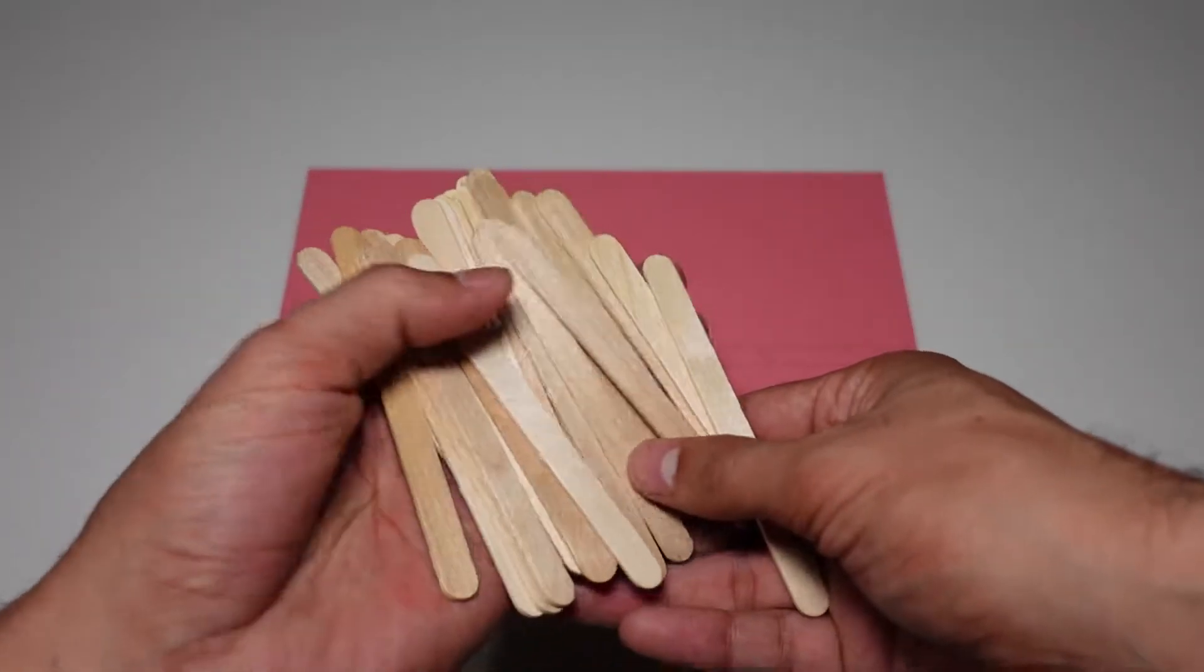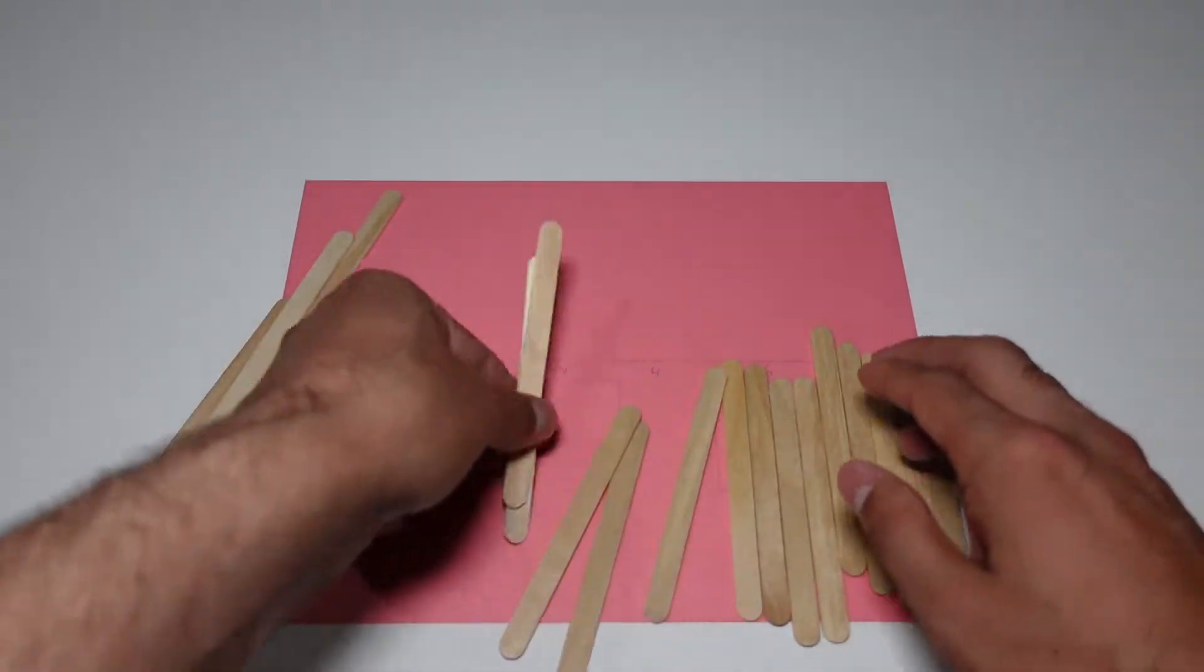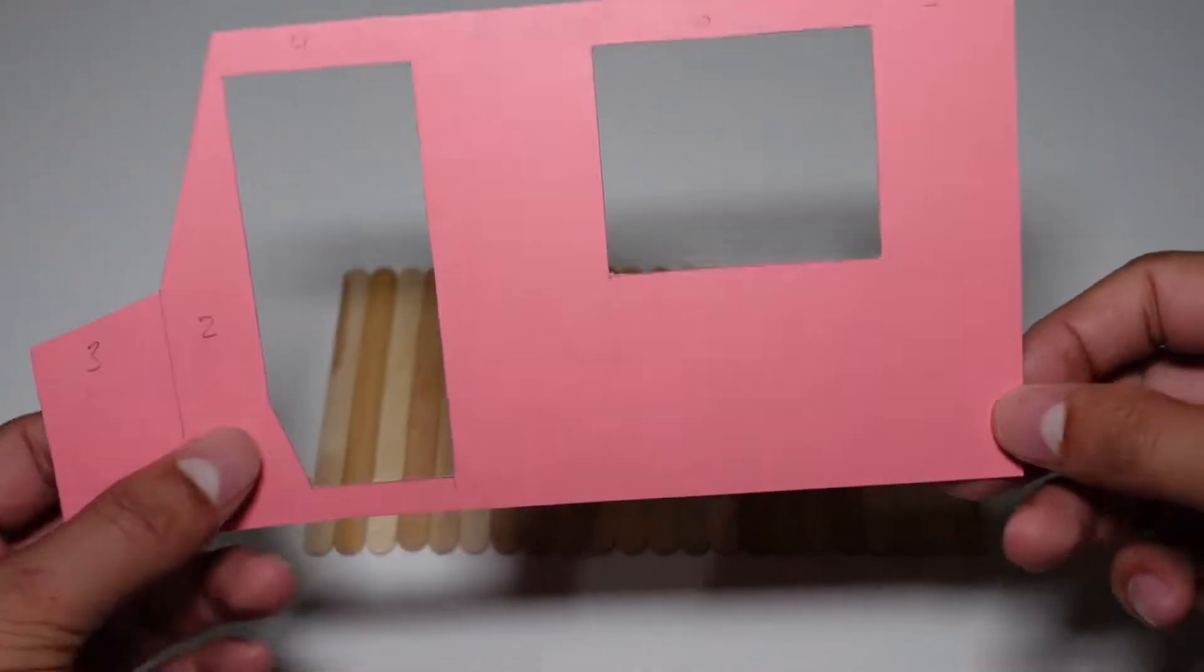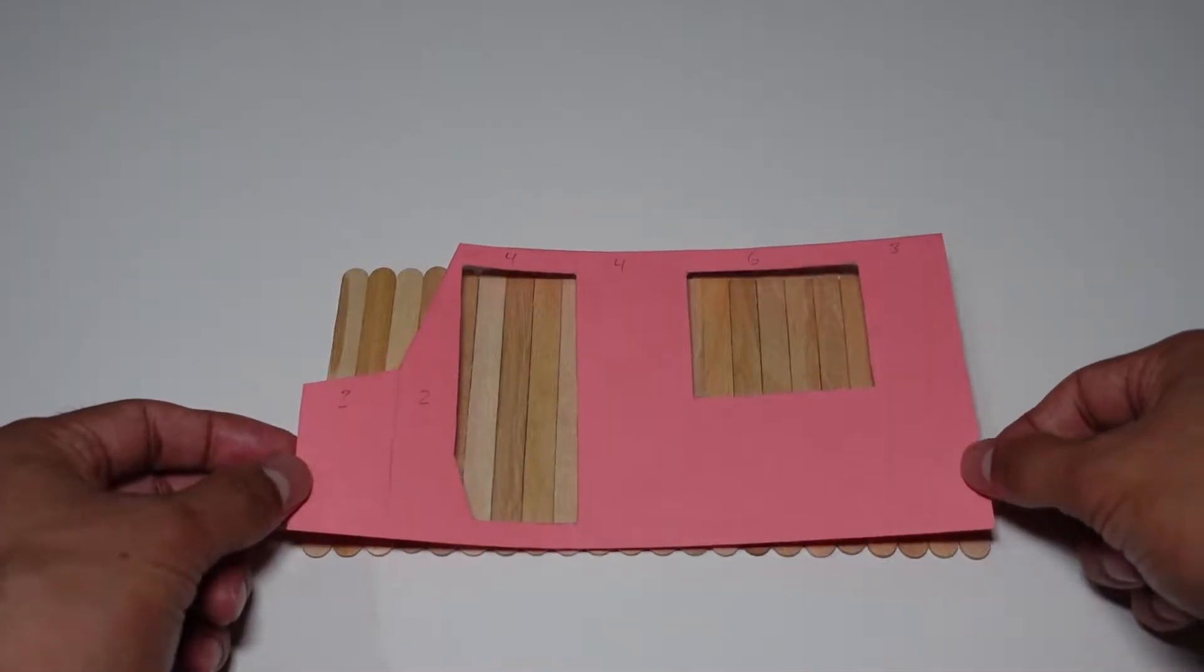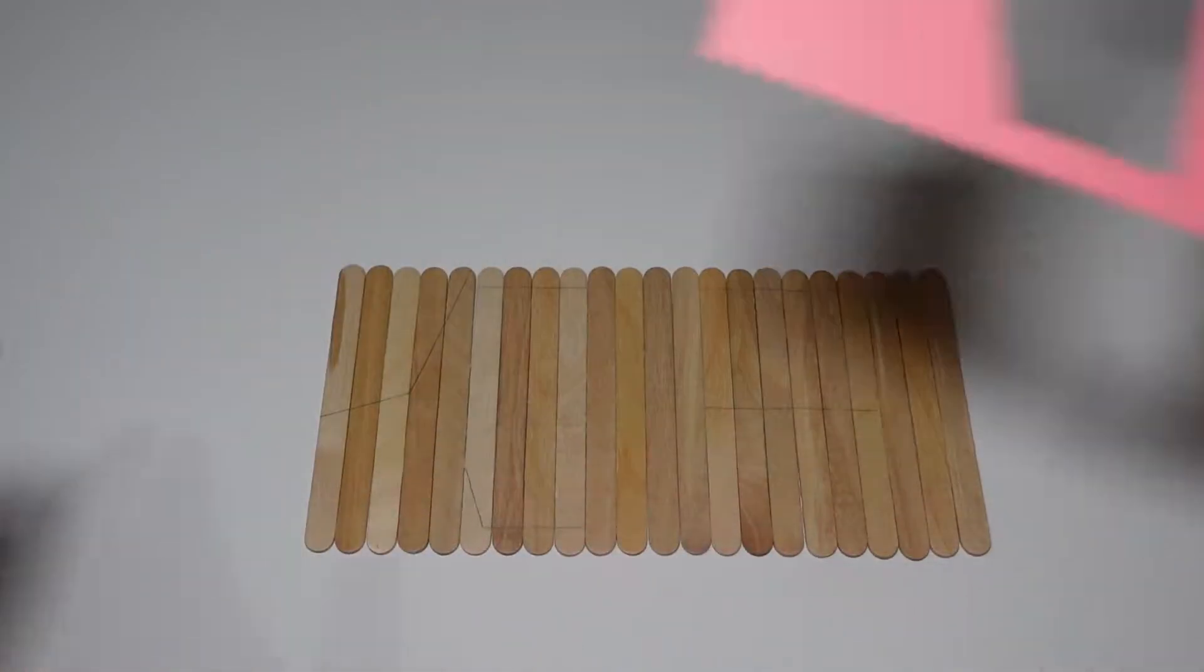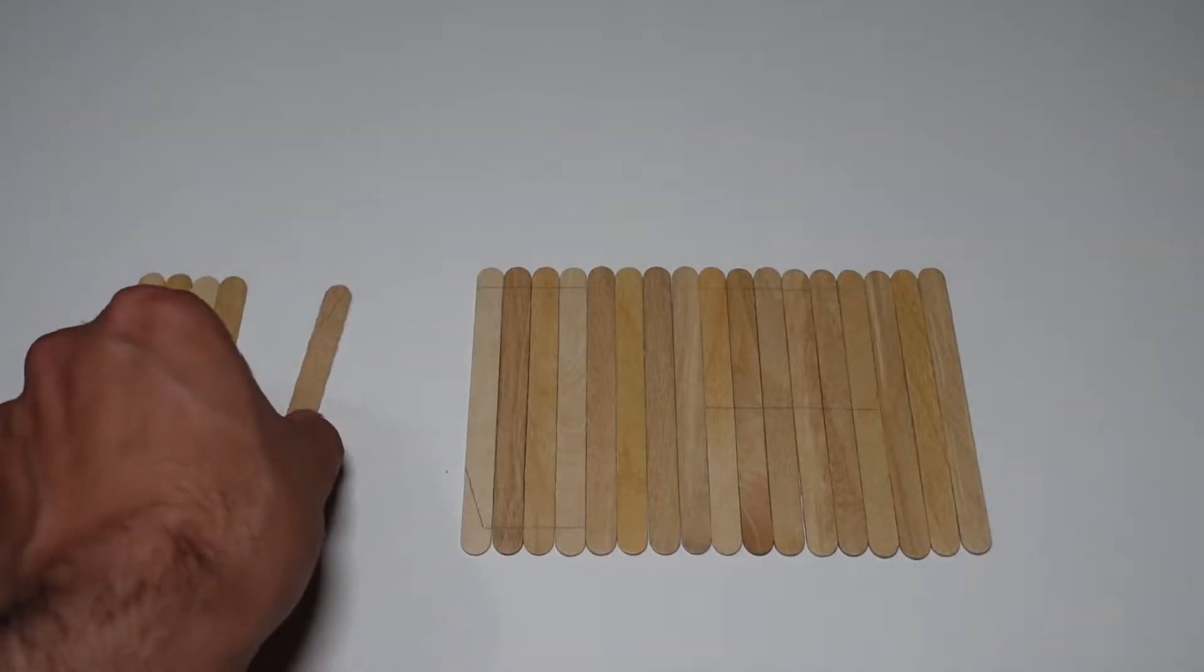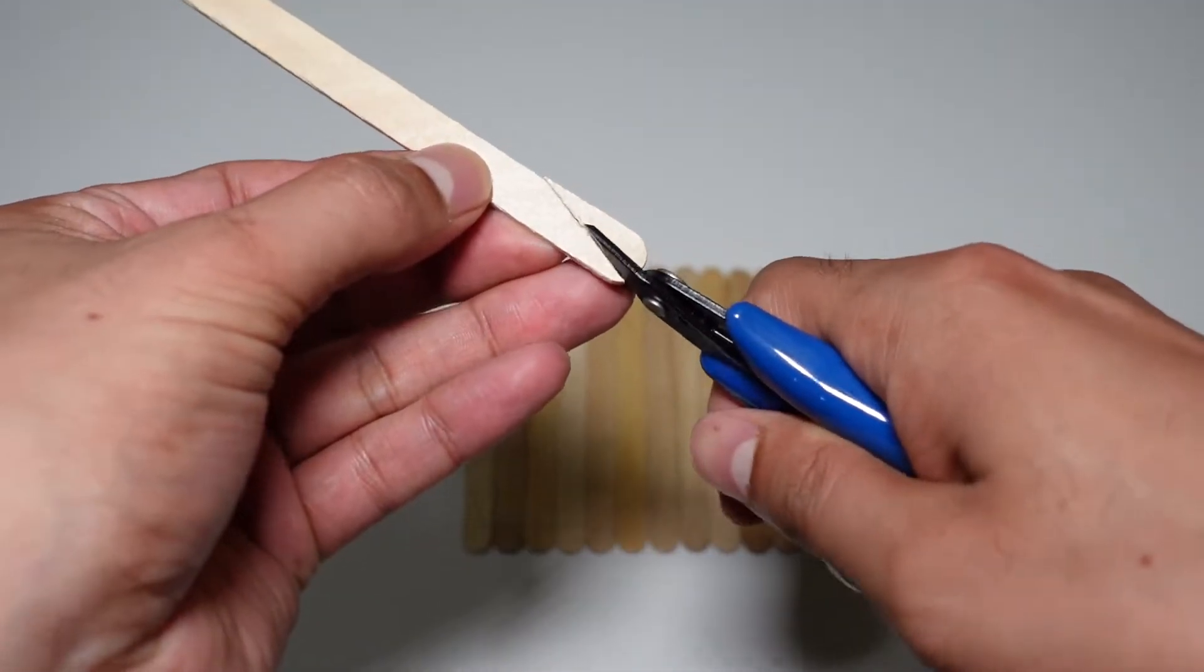For this project you need lots of popsicle sticks. I lined them up over this outline of the side of the ice cream truck. This ice cream truck is going to be 22 popsicle sticks long. I drew and cut out the side profile of the truck and numbered it according to how many sticks I'll use for that part. I will cut out over the sticks and trace. Now it's time to cut the outlines.